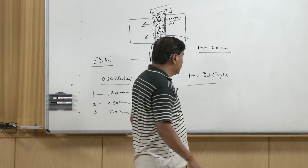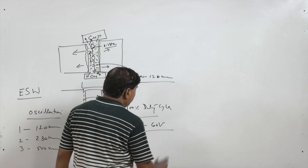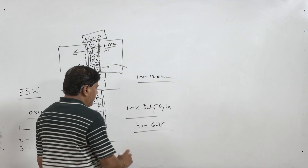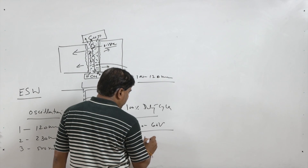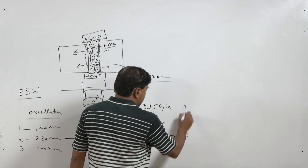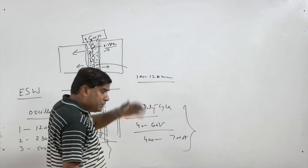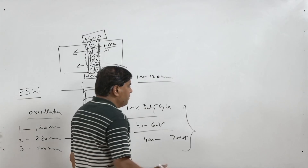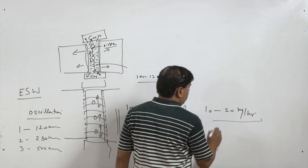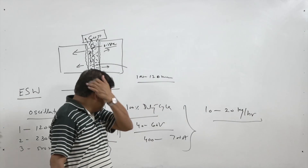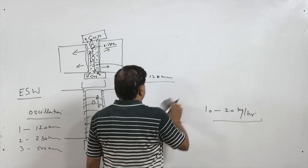The process works with 100 percent duty cycle. It is common that 40 to 60 volt arc voltage is used, with a normal current rating of 400 to 700 ampere. Depending upon the electrode diameter, a deposition rate from 10 to 20 kg per hour can be achieved, which is on the higher side and similar to that of the submerged arc welding process.